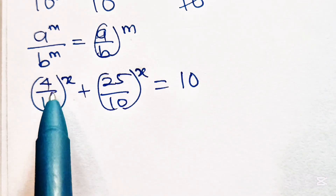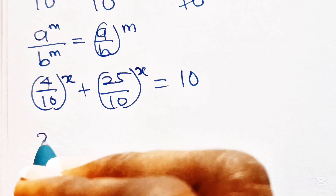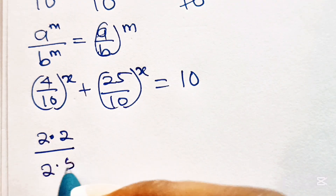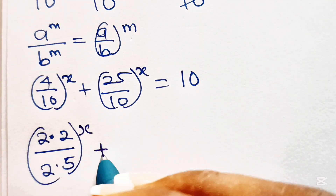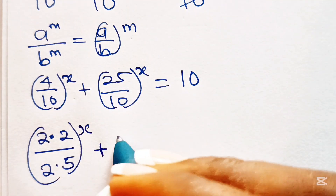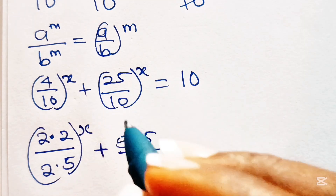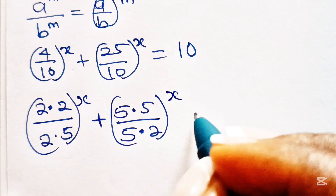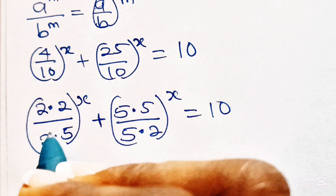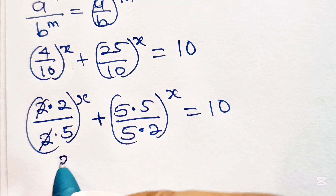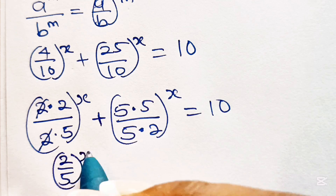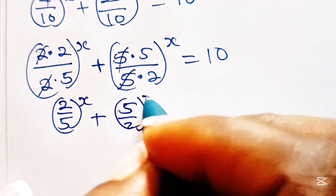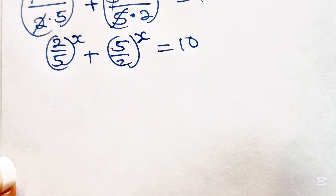Now let's reduce this to its lowest terms. 4 is the same as 2 multiplied by 2, and 10 is the same as 2 multiplied by 5. Plus, 25 is the same as 5 multiplied by 5, and 10 is the same as 5 multiplied by 2, is equal to 10. So we have 2 over 5 raised to the power of x, plus — we cancel 5 — we have 5 over 2 raised to the power of x, is equal to 10.